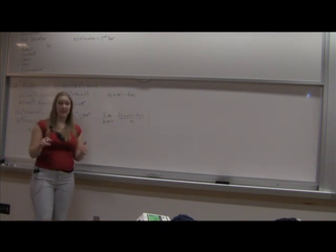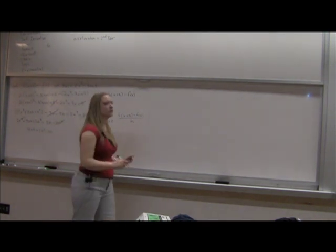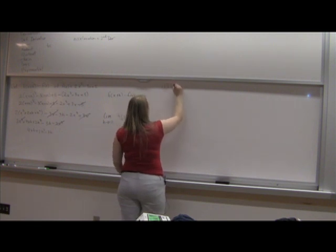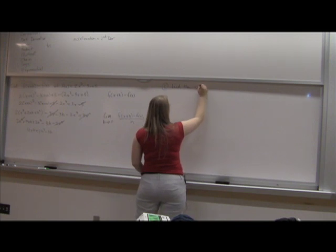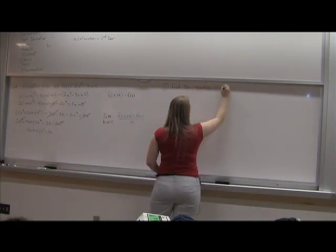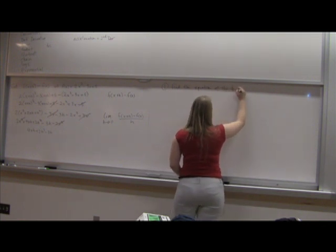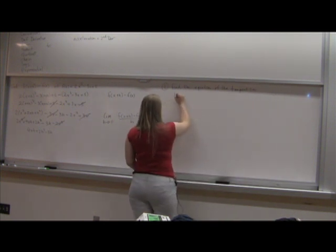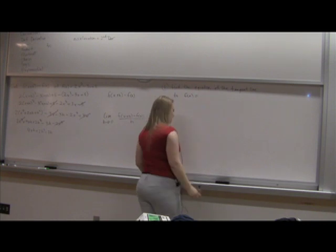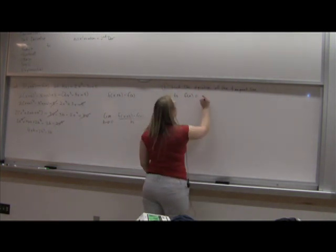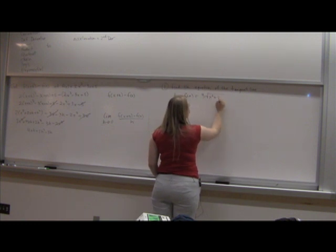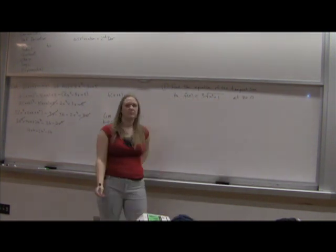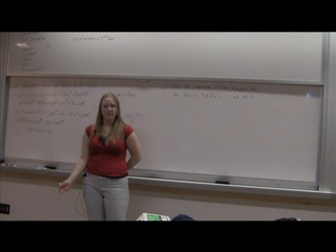Okay, you ready for derivatives? I'm just going to write them down and see how many we can get through. I'm just going to call this problem number one. Find the equation of the tangent line to f of x equals 3√(x² + 1) at x equals zero.